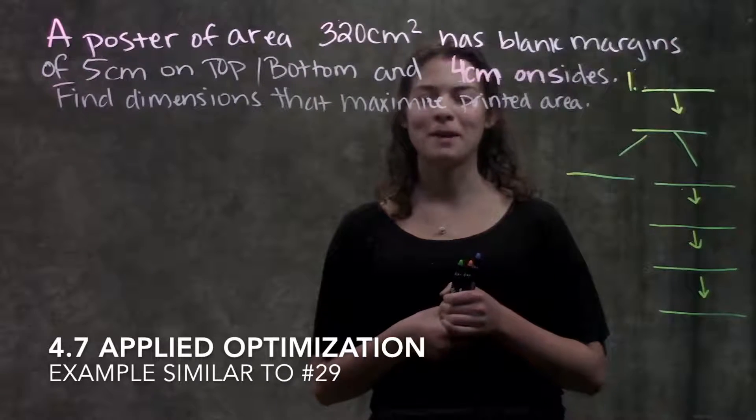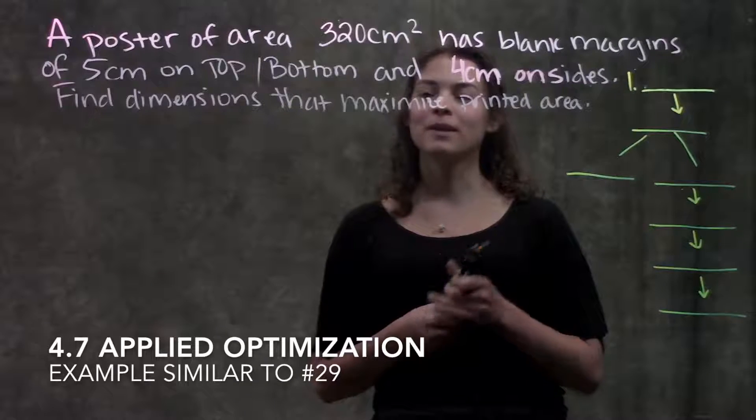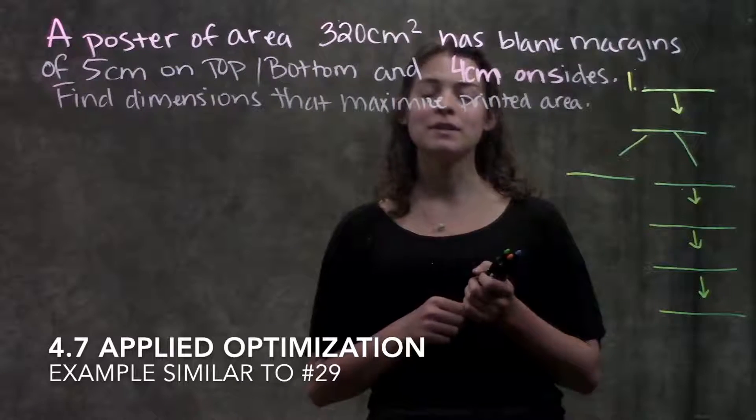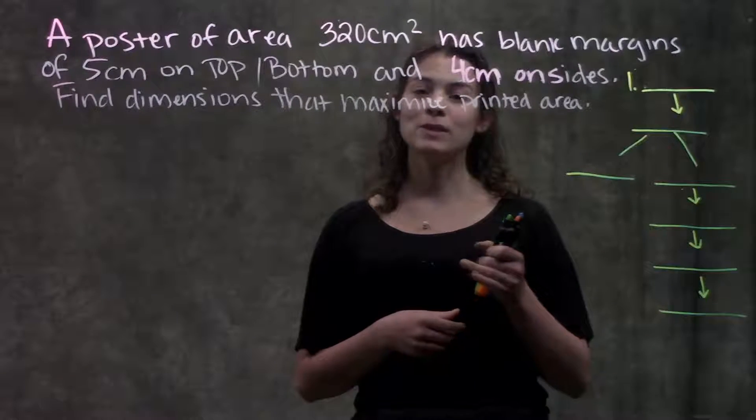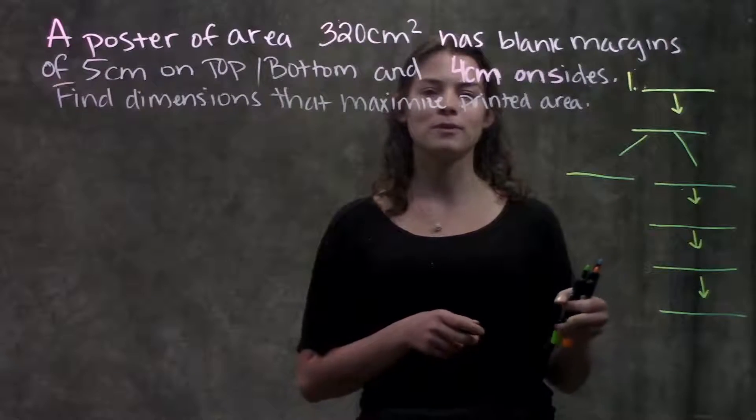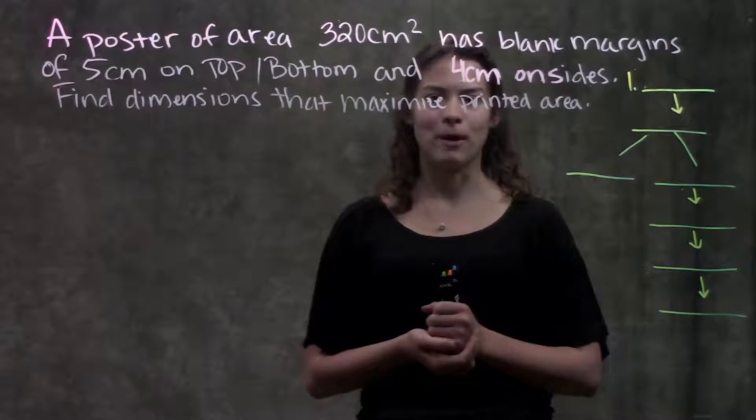This is section 4.7, Applied Optimization. In this video, we're going to go through an example problem that's really similar to number 29 in your book, and as we solve this problem, we're also going to go through a flowchart of how to approach these types of problems.